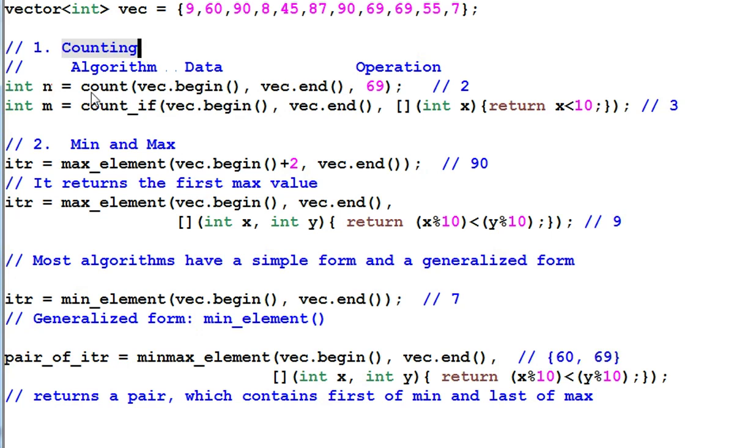First, counting. The count function counts the number of items that equal to 69 in this data range. And since there are two 69 in vec, so the result is 2. As we mentioned, the algorithm function takes data through iterators. So in this case, it's using this pair of iterators to specify the range of data that the algorithm will be working on. So if I use vec.begin plus 2, then the range of data is this range. The first two are excluded.